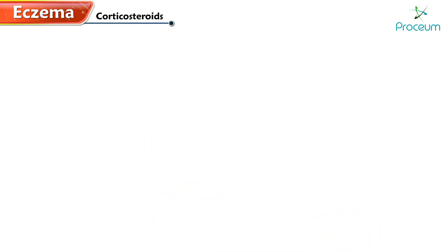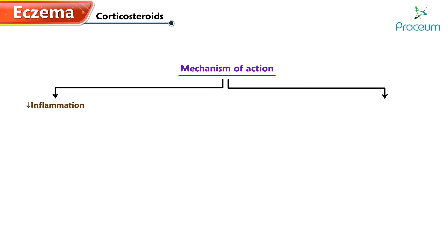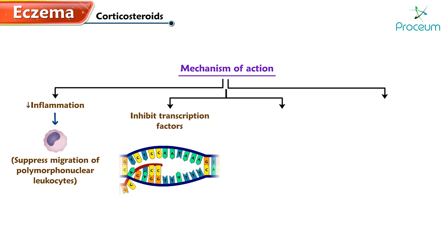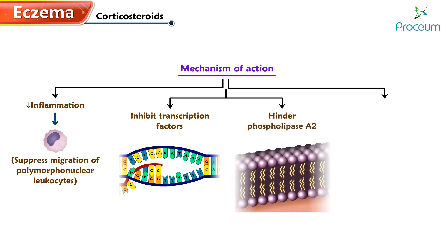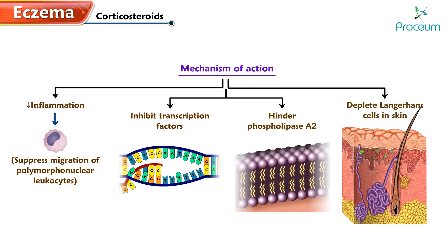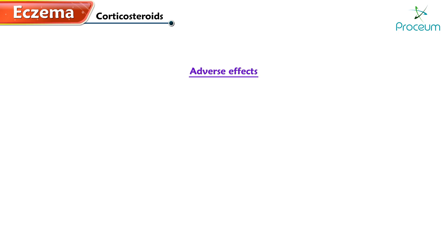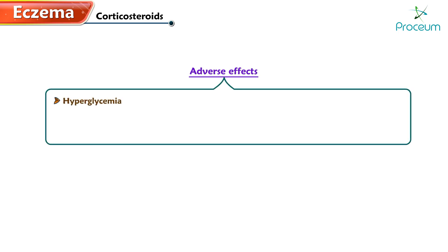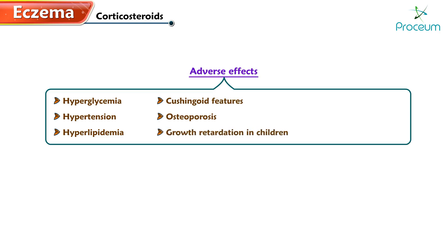Let's learn more about corticosteroids. Their mechanism of action involves decreasing inflammation through the suppression of the migration of polymorphonuclear leukocytes. They inhibit transcription factors and hinder phospholipase A2, and deplete Langerhans cells in the skin. Adverse effects include hyperglycemia, hypertension, hyperlipidemia, cushingoid features, osteoporosis, growth retardation in children, poor wound healing, cataracts, and myopathy.